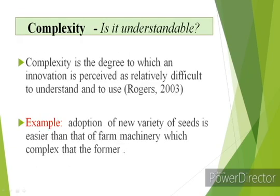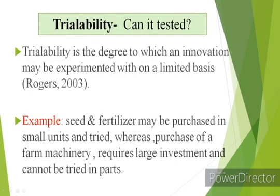The third attribute of innovation is complexity — is it understandable? Complexity is the degree to which an innovation is perceived as relatively difficult to understand and use. For example, adoption of a new variety of seed is easier, but adoption of farm machinery is more complex — the farmer requires skill and knowledge to adopt farm machinery after receiving information about the innovation.